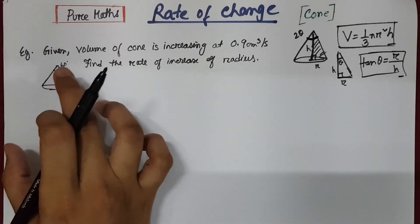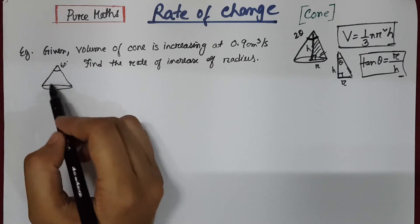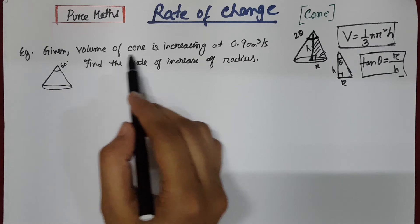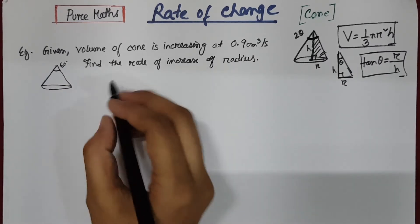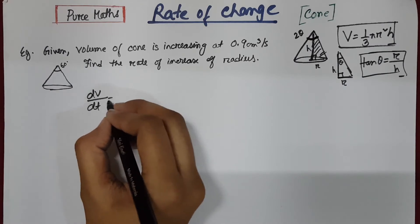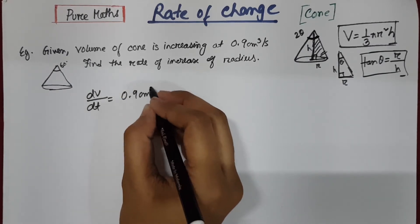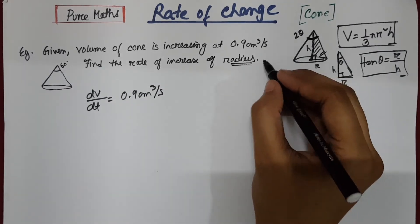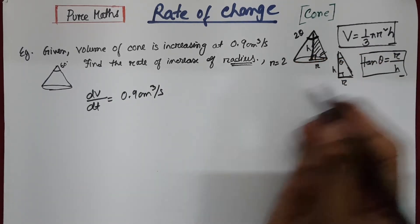So suppose we have an example here, suppose some sand is being poured and a conical shaped object is formed and the volume is increasing at a rate of 0.9 cm³ per second. So dV by dt equals 0.9 cm³ per second. And we need to find the rate at which the radius is increasing when the radius is 2.